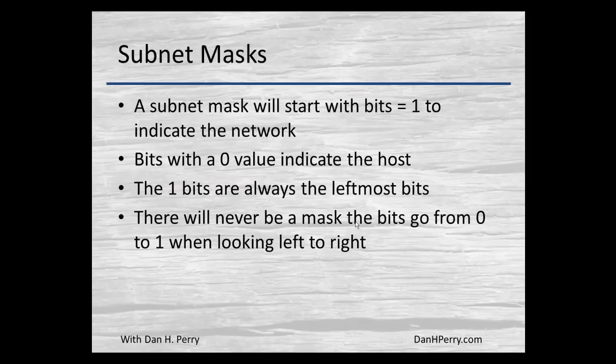Subnet masks always start with the leftmost bits as ones. Moving from bit zero to bit 31, we'll have ones until we get to the end of the network portion. At that point the bits switch to zero, indicating the host portion. Leftmost bits are always one, rightmost bits zero. You'll never see a transition going from a zero back to a one in a subnet mask — only the transition from ones going to zero.